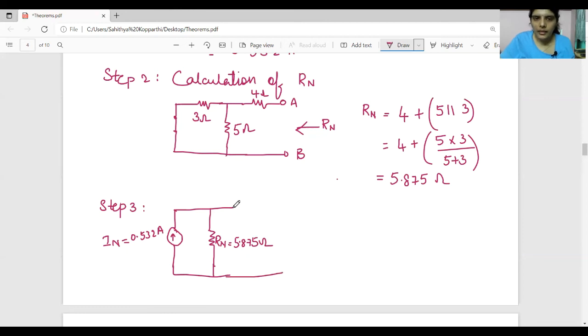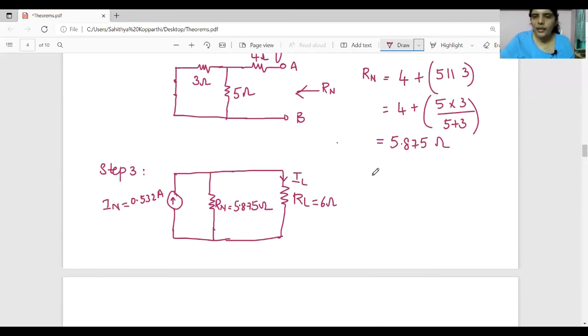Now let 6 ohm be RL. RL is equal to 6 ohm. Now we have to calculate the current flowing through 6 ohm as given in the problem.